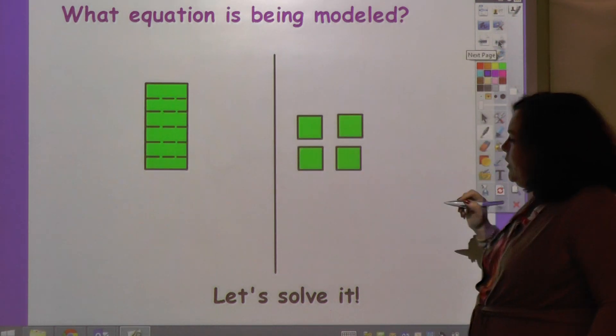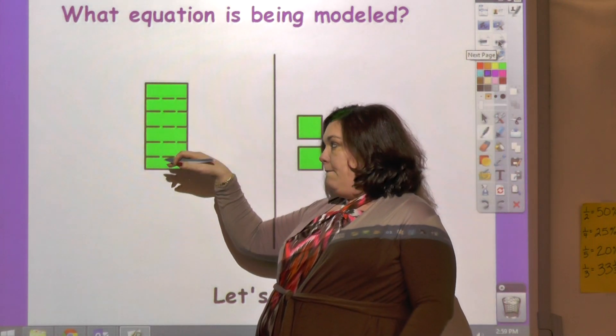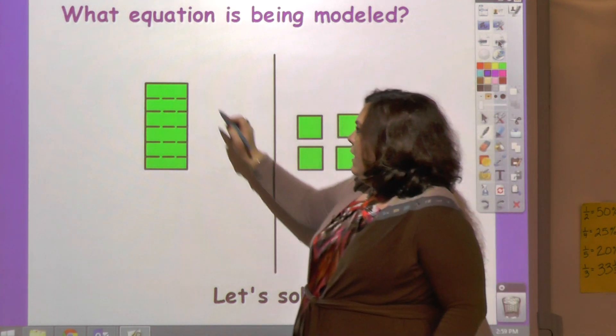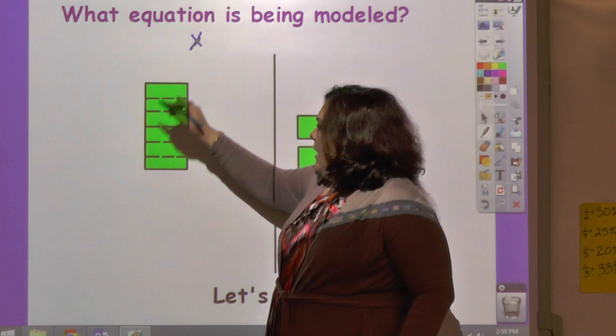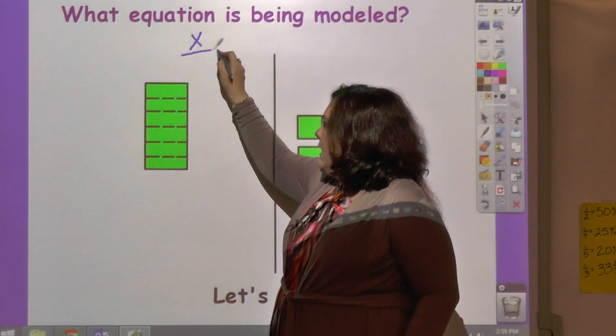What equation is being modeled? Does this look like multiplication? It's divided up, so that would be your clue that it's division. And so it's x, and it's divided into 1, 2, 3, 4, 5, 6. x divided by 6.